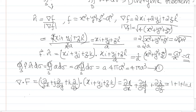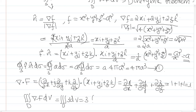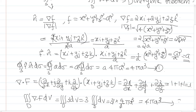The triple integral of ∇·F dV equals the triple integral of 3 dV = 3 times the volume of the sphere = 3 × (4/3)πa³ = 4πa³. This is equation number 2.